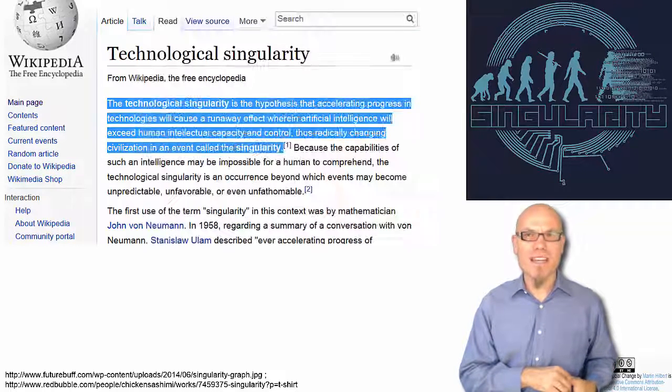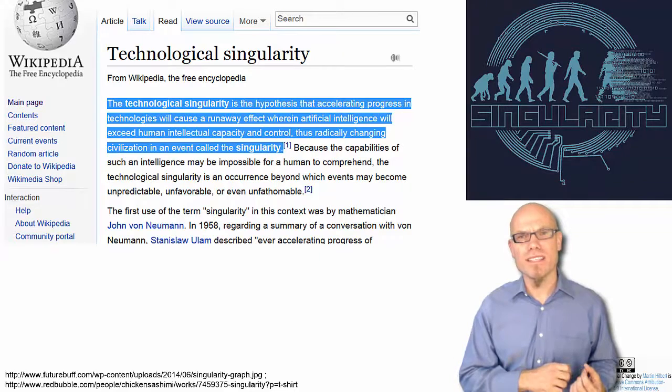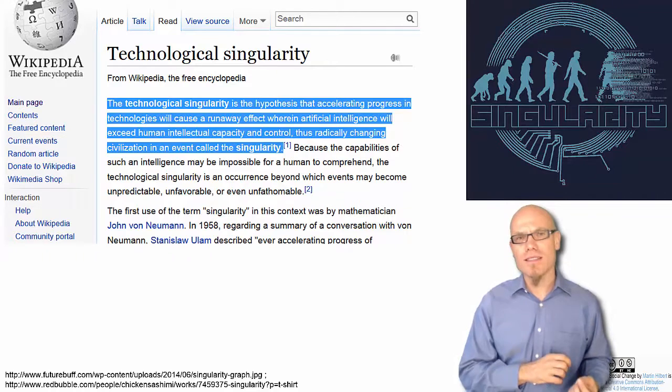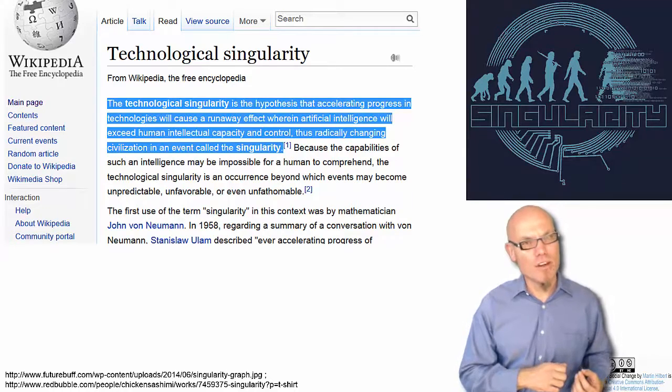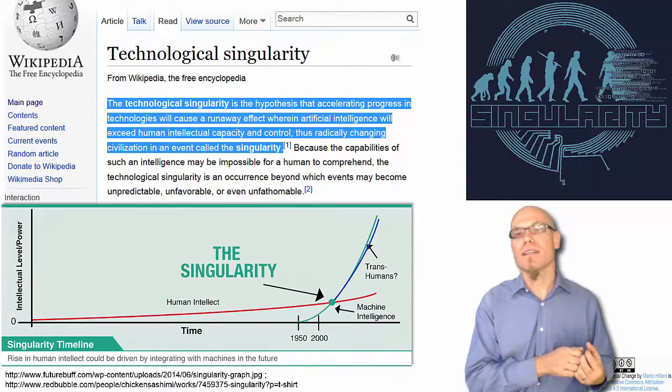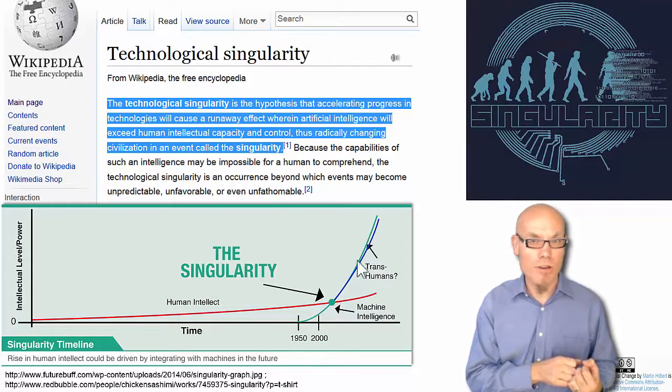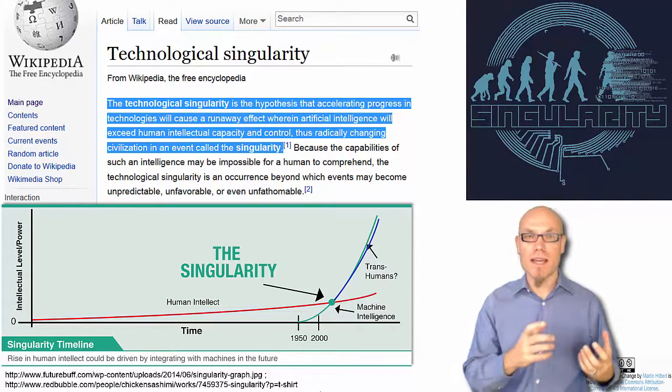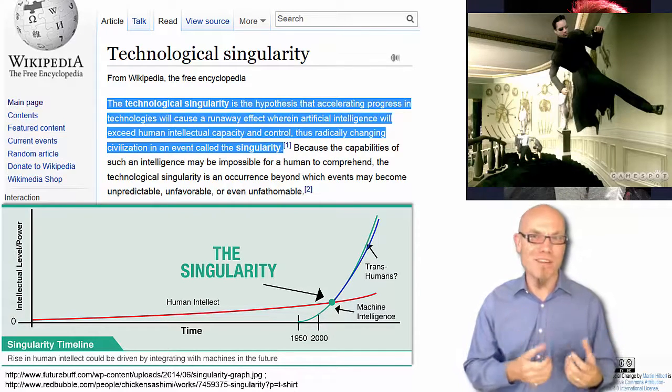That has to do with the hypothesis that accelerating progress in technologies will cause runaway effects, wherein artificial intelligence will exceed human intellectual capacity and control, thus radically changing civilization in this event called singularity. That means that machine intelligence basically overtakes human intellect at one point. Now that's pretty scary, especially if you think about future visions like the Terminator, Skynet awakening, or the Matrix turning us into batteries or whatever.